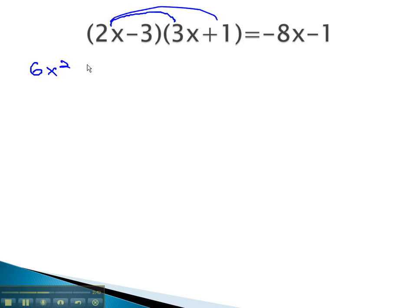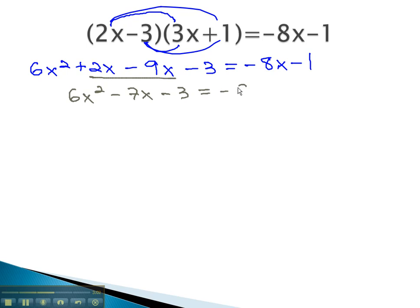6x squared plus 2x minus 9x minus 3 equals negative 8x minus 1. We can combine the like terms on the left side to get 6x squared minus 7x minus 3 equals negative 8x minus 1.